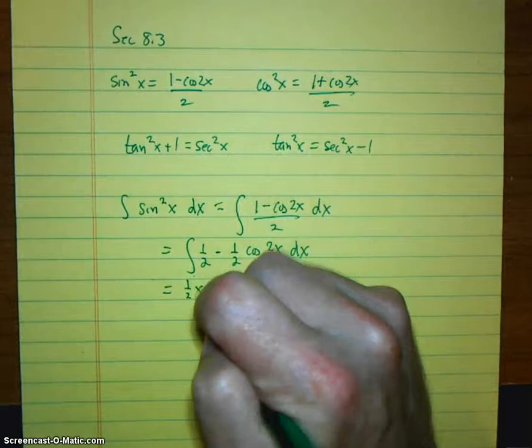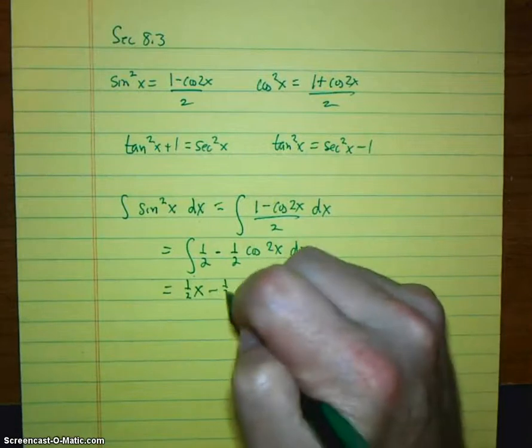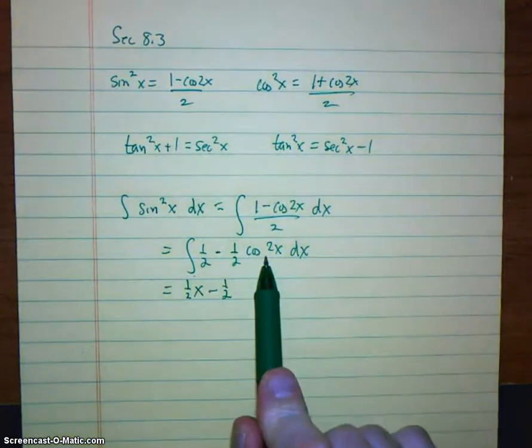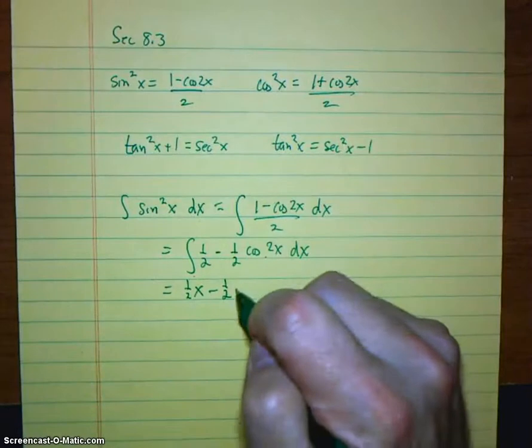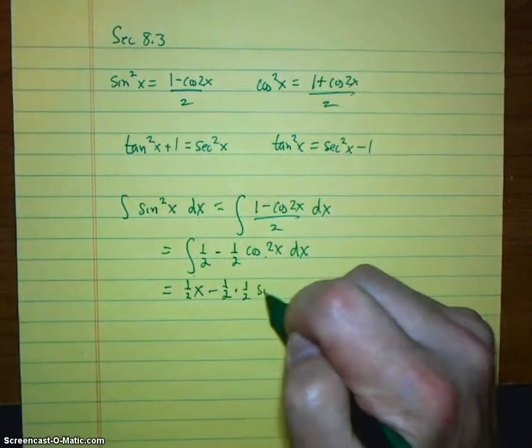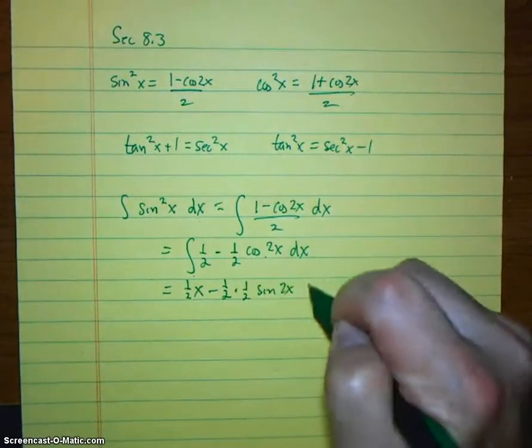And now we integrate both parts. This is 1 half x minus 1 half. When we integrate this cosine, because of this 2, we're going to get another 1 half. And then it will be sine 2x plus c.